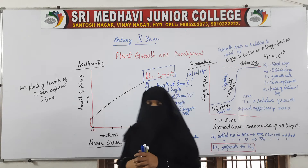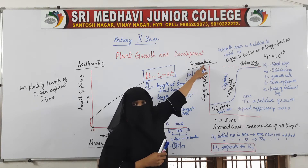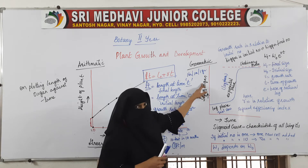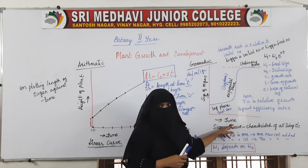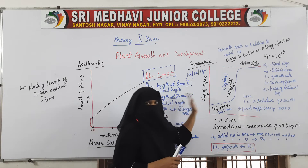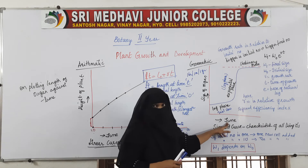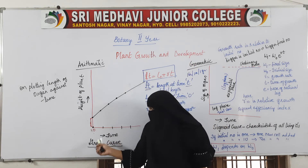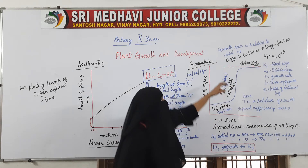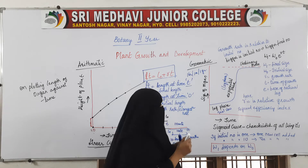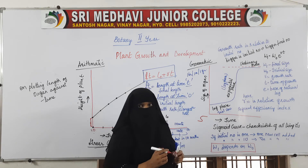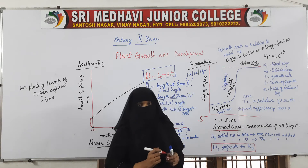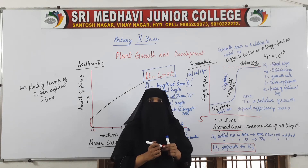When we plot the curve for geometric growth rate, we take size of the organ on one axis and time on the other. Unlike arithmetic growth rate where we got a linear curve, in geometric growth rate we get an S-shaped curve. This S-shaped curve is called the sigmoid curve.